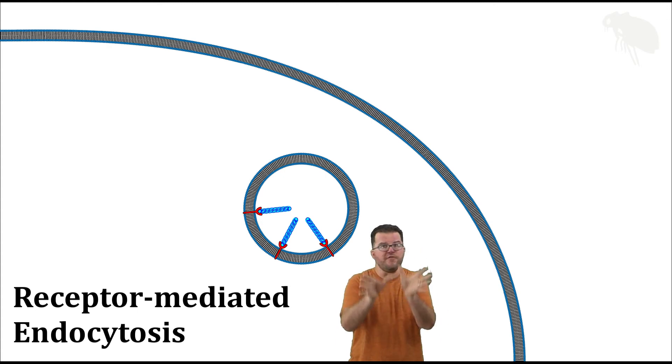Pinocytosis, we're taking in whatever fluid's next to the membrane. In receptor-mediated endocytosis, it's specific to whatever things can bind to the receptors.